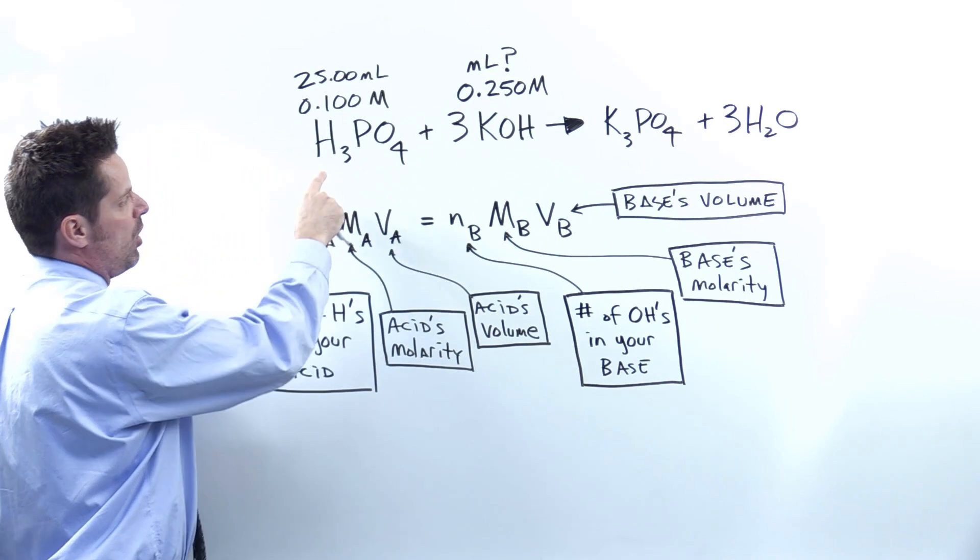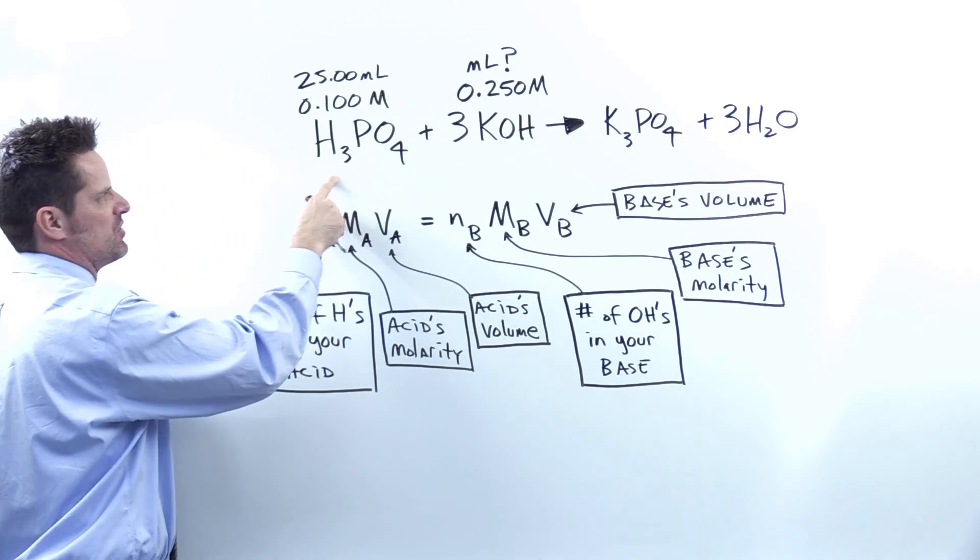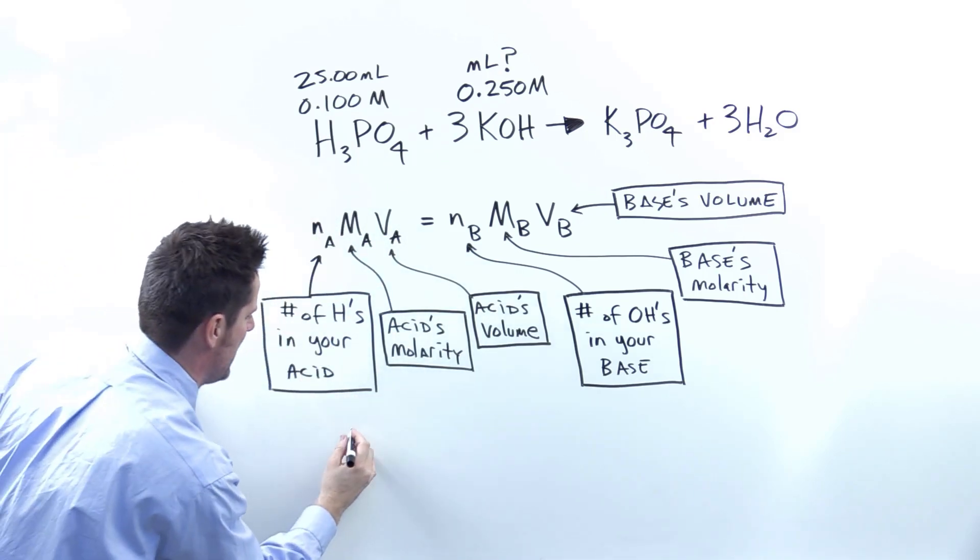So what is the Na? Well over here, this is my acid, my H3PO4. How many H's are there in this formula? Yeah, there are three. So I'll put three in here for Na.